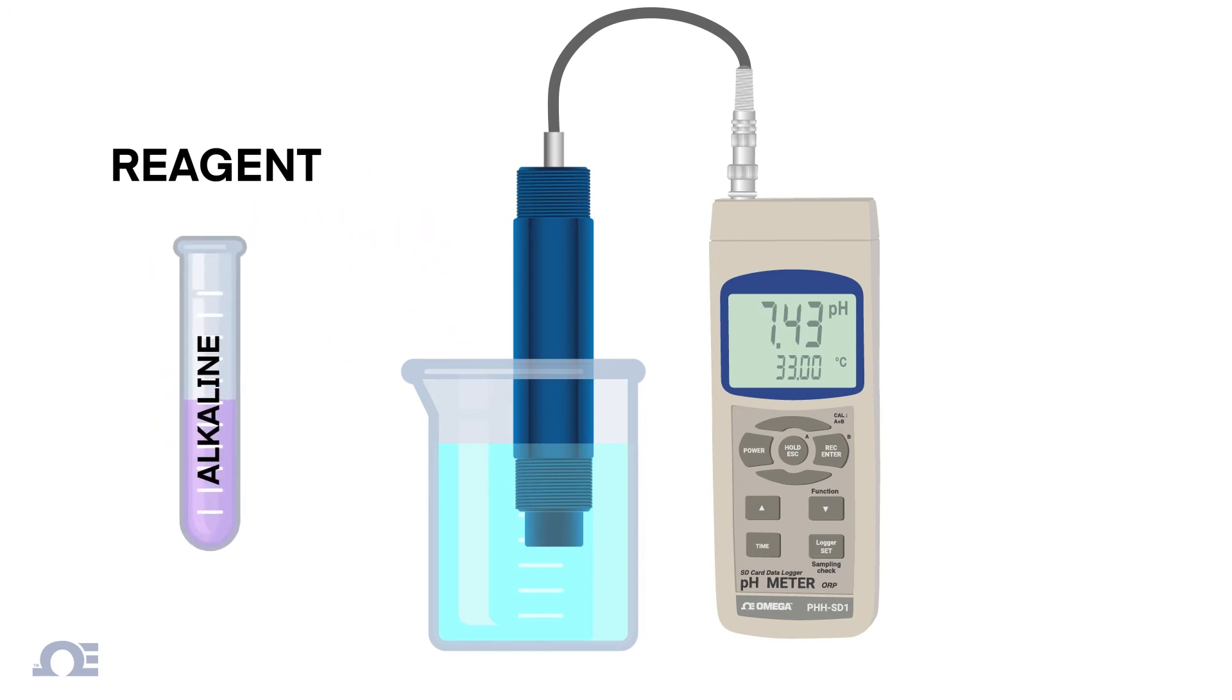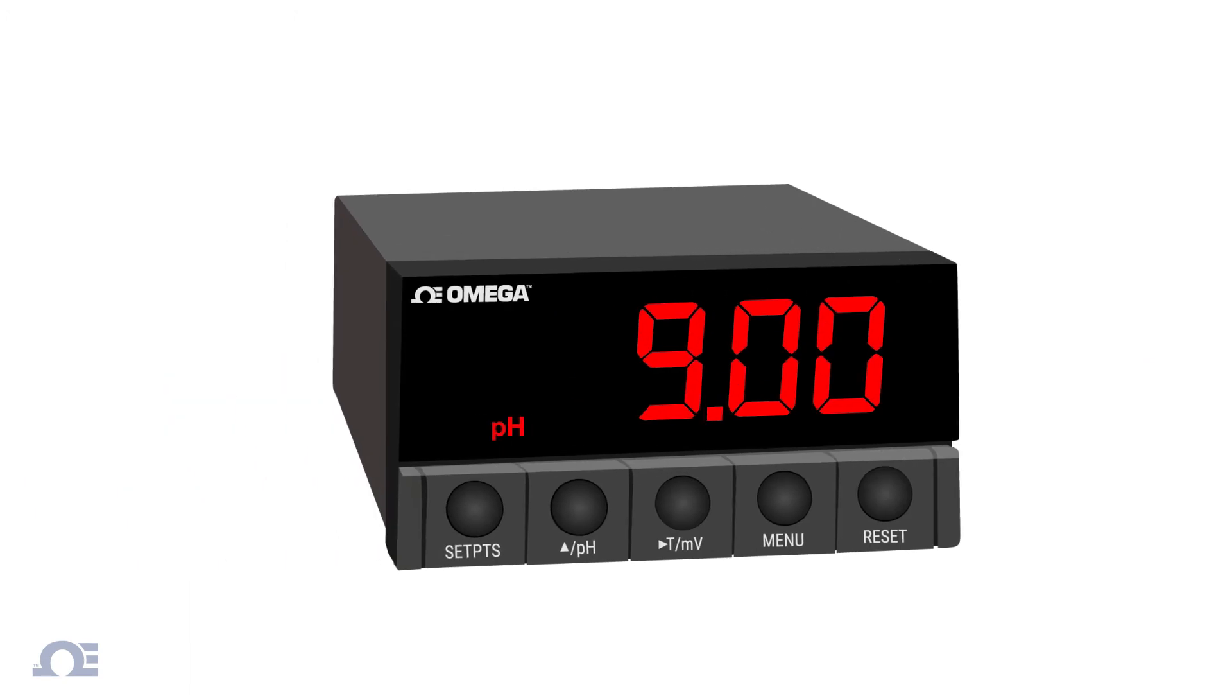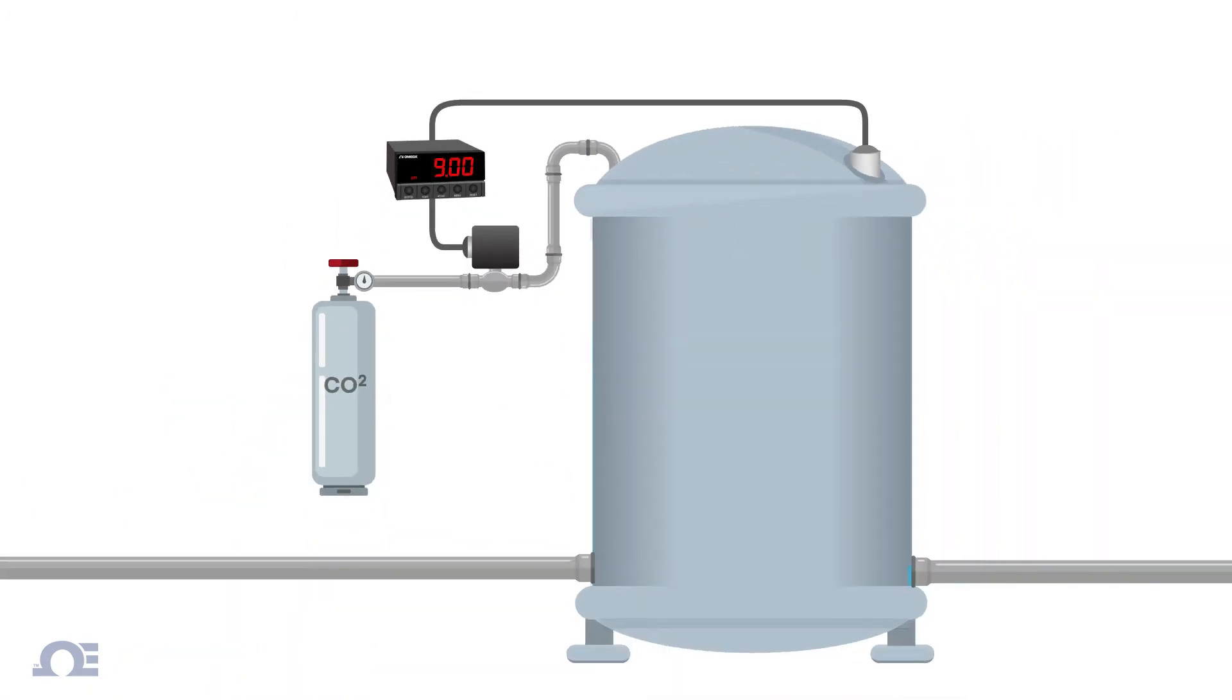This is a very simple example and would not be practical on a large scale or where pH adjustments need to be made on a constant basis. But if we use a pH controller in a closed-loop control system like this one, we can automatically maintain the pH level within a predetermined range.